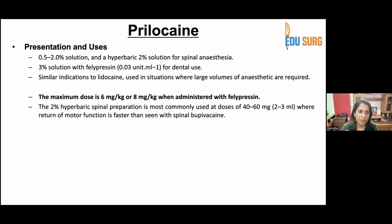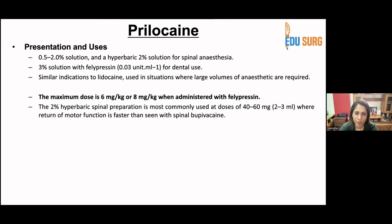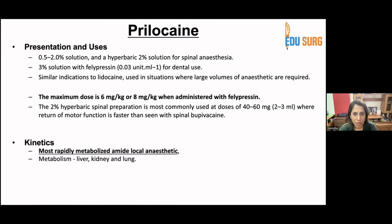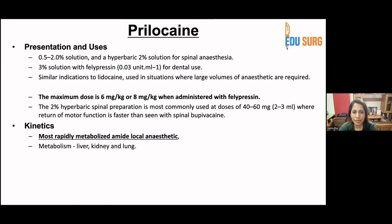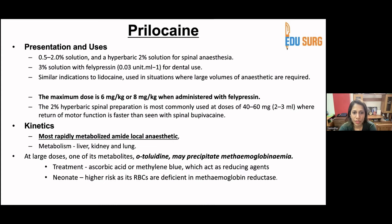Prilocaine is available in 0.5 to 2% solution and a hyperbaric 2% solution for spinal anesthesia. A 3% solution with felypressin is available for dental use. Indications are similar to lidocaine and it is used in situations where large volume anesthesia is needed. Maximum dose is 6 mg/kg, or 10 mg/kg when administered with felypressin. The 2% hyperbaric spinal preparation — available in 2 to 3 ml — is most commonly used, and return of motor function is faster compared to bupivacaine. It is the most rapidly metabolized amide local anesthetic, with metabolism occurring in the liver, kidney, and lung. At large doses, its metabolite O-toluidine may precipitate methemoglobinemia, which can be treated with reducing agents — ascorbic acid or methylene blue. Higher risk in neonates as they are deficient in metabolizing methemoglobin.